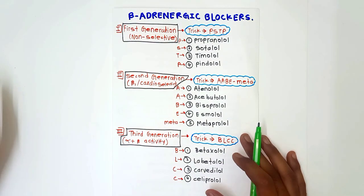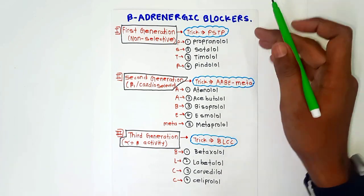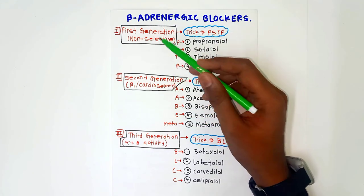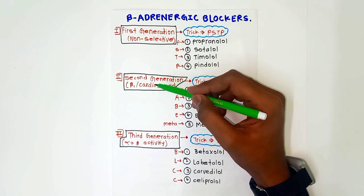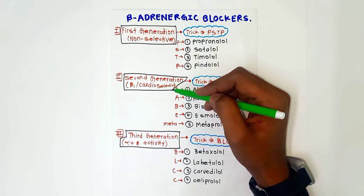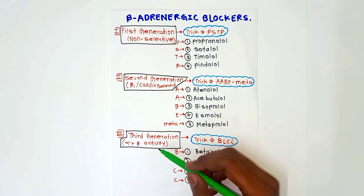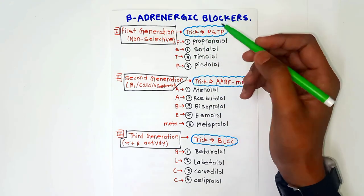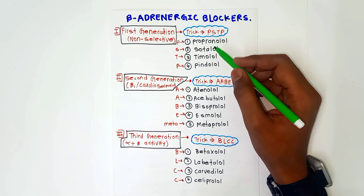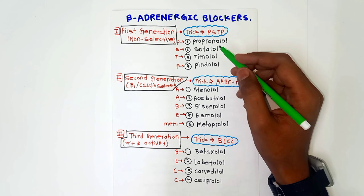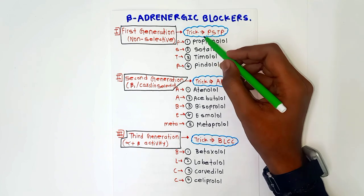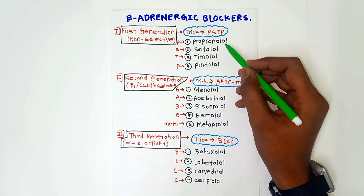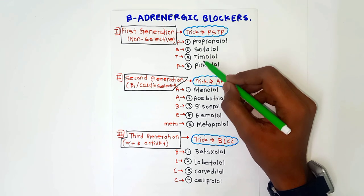Now the classification of beta blockers. Beta blockers are divided into three groups: first generation, second generation, and third generation. First generation is also called non-selective beta blockers; second generation is beta-1 selective, that is cardio-selective; and third generation has alpha plus beta activity. Non-selective means they act on both beta-1 and beta-2 receptors. The trick to remember first generation is PSTP — P for propranolol, S for sotalol, T for timolol, and P for pindolol.